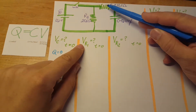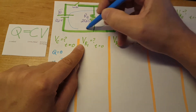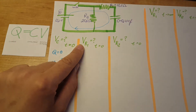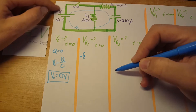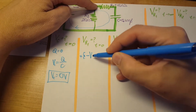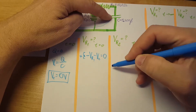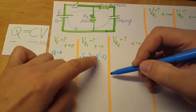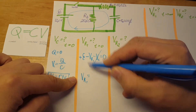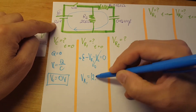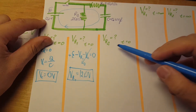Part B: voltage on resistor 1. We use the outer loop going clockwise and apply the loop rule. Starting around the loop: plus EMF, minus voltage on resistor 1, minus voltage on the capacitor, equals zero. The capacitor voltage is zero, so voltage on resistor 1 equals EMF, which is 12 volts.